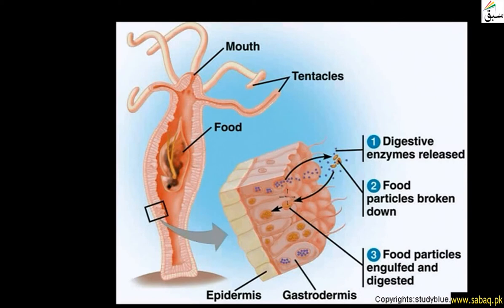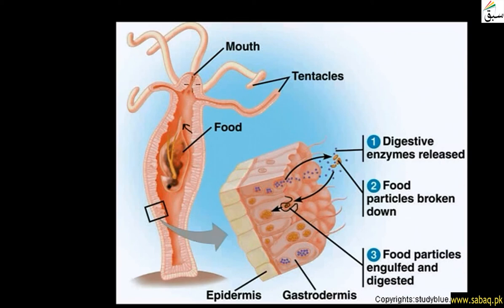The cells form an invagination to engulf the digested particle. After further digestion, the material is processed within the cell. Waste material is then expelled by exocytosis through the gastro-vascular cavity. Hydra has a single opening which is used for both intake and expelling waste material.